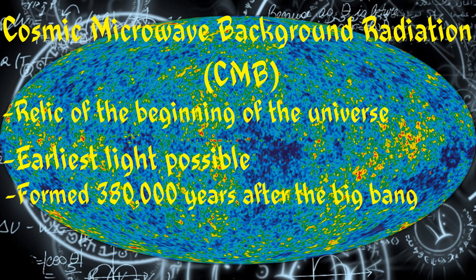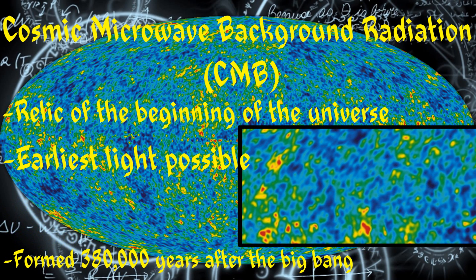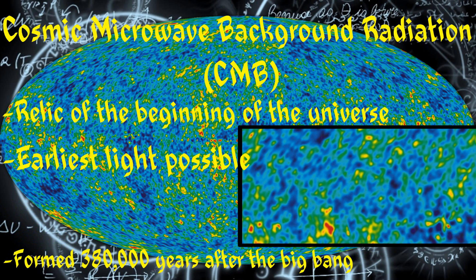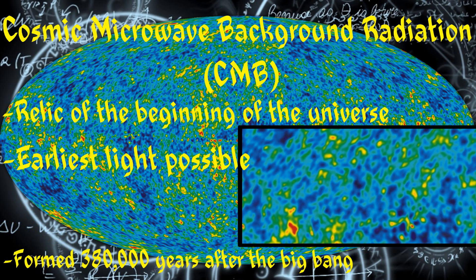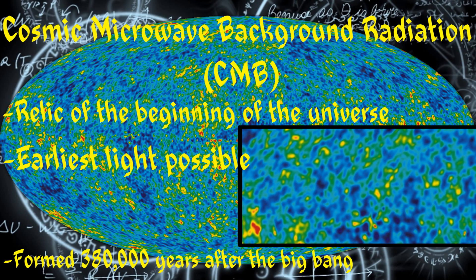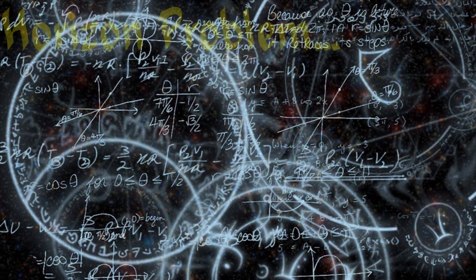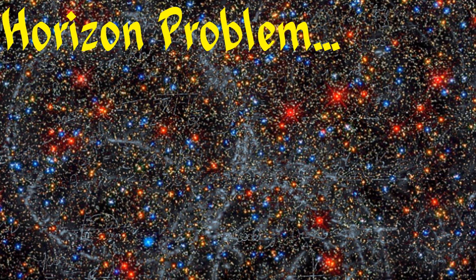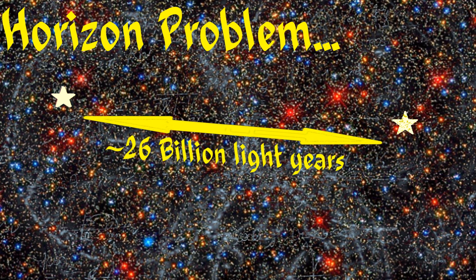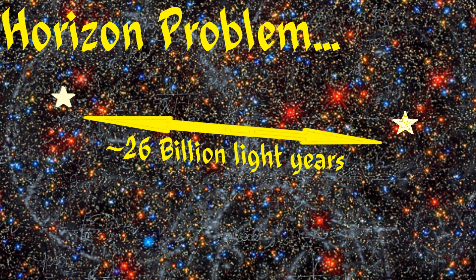We notice its incredible uniformity, and that poses physicists with the horizon problem. It points out that different regions of the universe have not contacted each other because of the great distances between them, but nevertheless they have the same temperature and other physical properties.